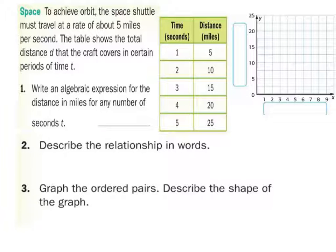You can see we have this table over here and we got this graph. It must travel at a rate of about 5 miles per second. The table shows the total distance d that the craft covers in certain periods of time t. Right now it's a break expression, it's saying write an equation. We're going to use x instead. All of our equations should be y equals something x.